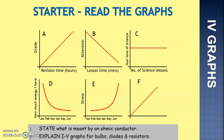For graph A, we're seeing a positive correlation — as revision time increases, the grade increases. For graph B, we've got a negative correlation: as lesson time increases, attention decreases.